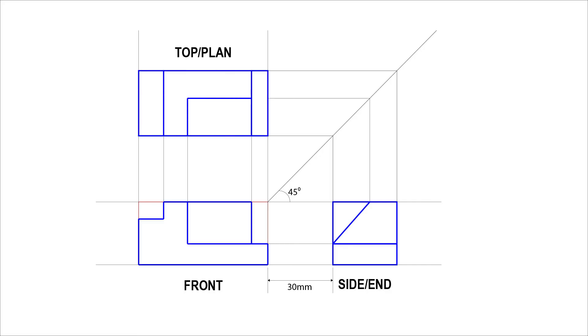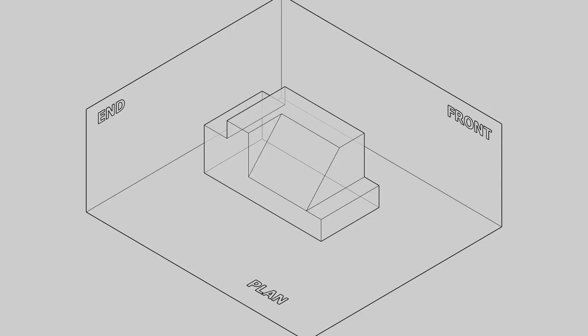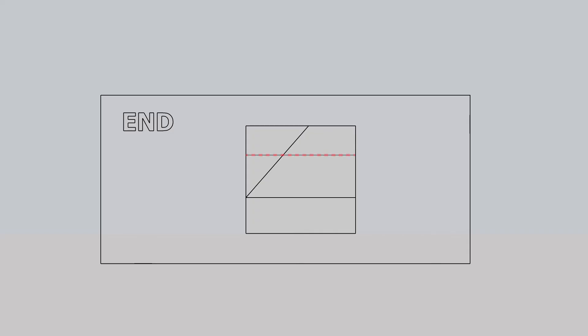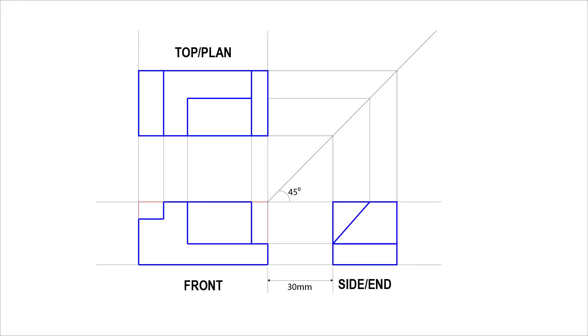Draw the plan view. We have hidden details in this drawing — let me help you out by watching an animation. There is a surface at the back of the end view which is hidden. Let's find it and draw it. Draw projection lines to the end view. Draw the broken lines.